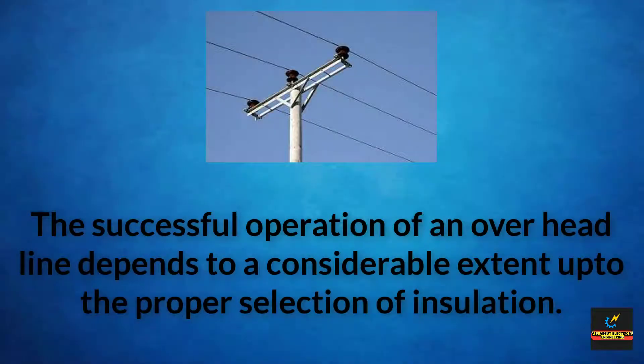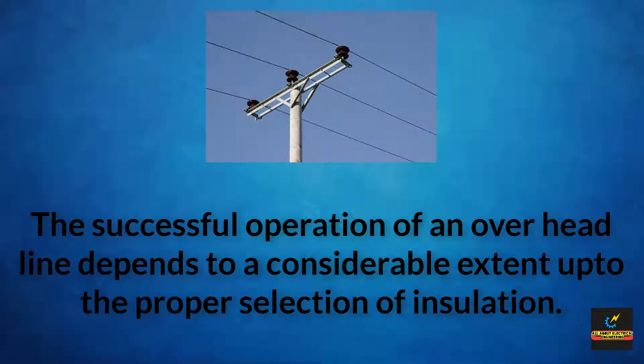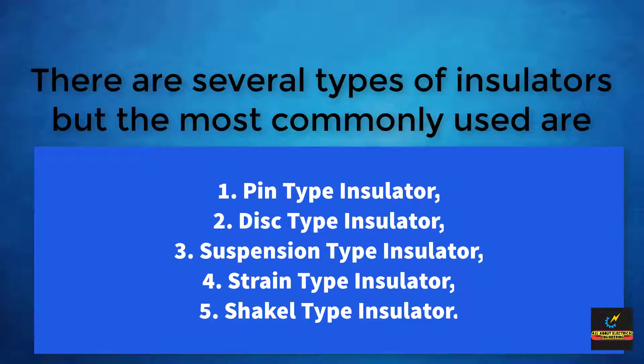The successful operation of an overhead line depends to a considerable extent upon the proper selection of insulation. There are several types of insulators, but the most commonly used are: first, pin type insulator; second, disc type insulator; third, suspension type insulator; fourth, strain type insulator; and fifth, shackle type insulator.